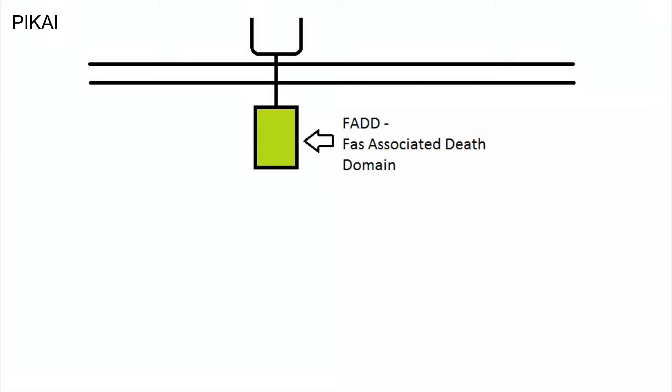In this video we are talking about the extrinsic pathway of apoptosis. In this pathway, the signal for apoptosis comes from outside the cell. For the definition of apoptosis, please check out my previous video. Today I'll discuss the extrinsic pathway of apoptosis, which starts with a ligand known as FAS ligand.